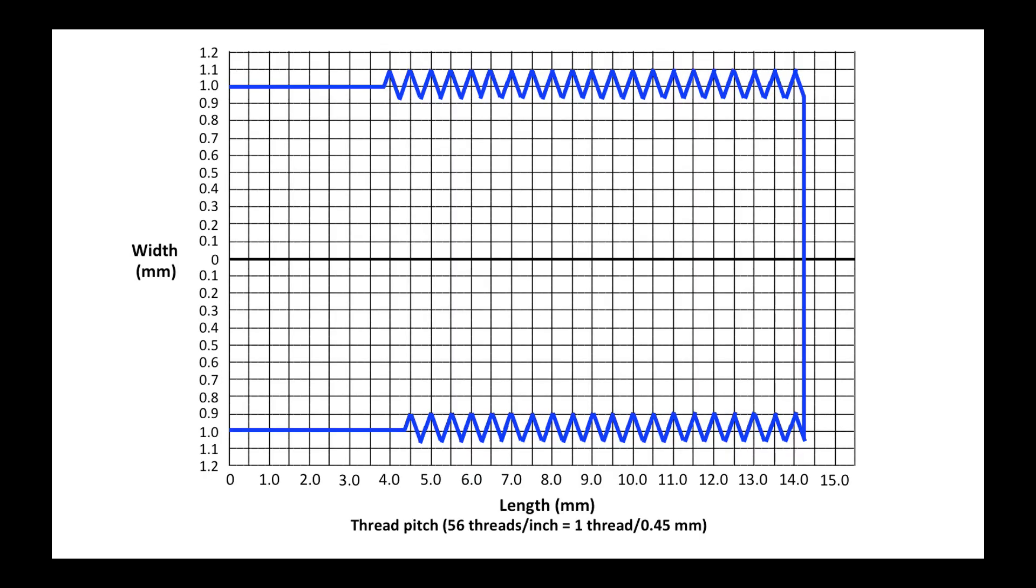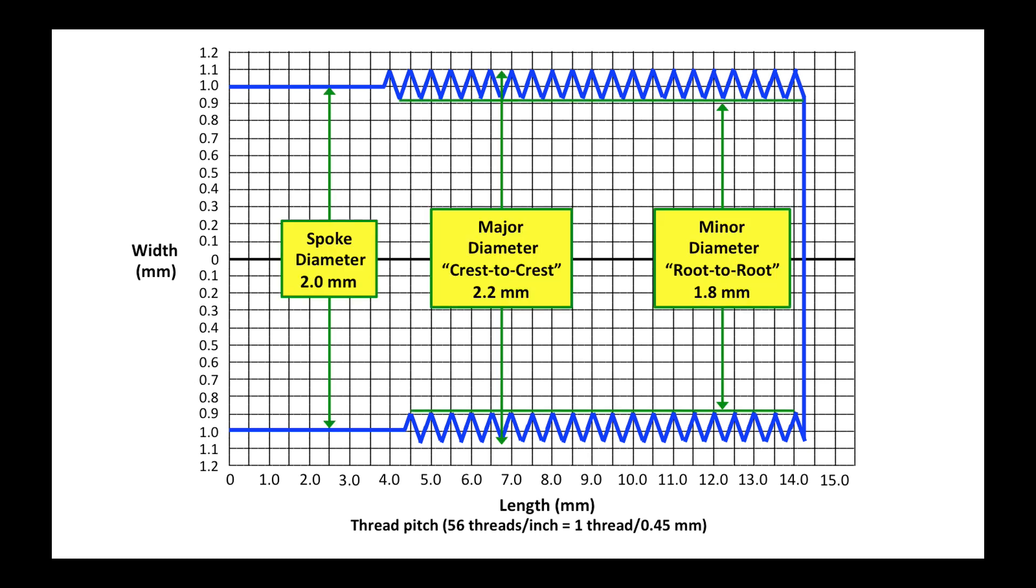Here is the threaded end of the spoke drawn to scale. If we put in some dimensions, we see that the spoke diameter before the threaded part begins is 2 millimeters. The major diameter, which is the crest-to-crest diameter, is 2.2 millimeters. The minor diameter, the root-to-root diameter, is 1.8 millimeters.